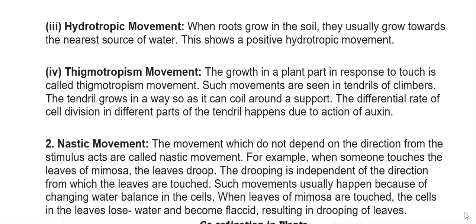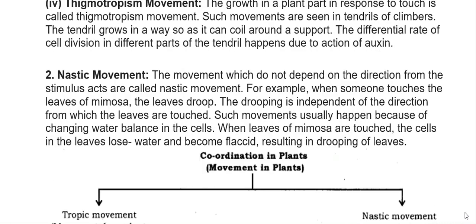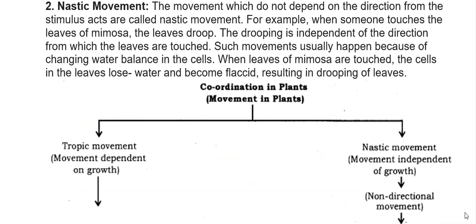Nastic movements are movements that do not depend on the direction from which the stimulus acts. For example, when someone touches the leaves of Mimosa, the leaves droop — the drooping is independent of the direction from which the leaves are touched. Such movements usually happen because of a changing water balance in the cells; when Mimosa leaves are touched, the cells lose water and become flaccid, resulting in drooping.